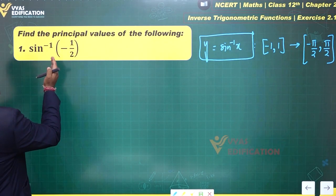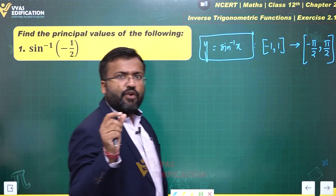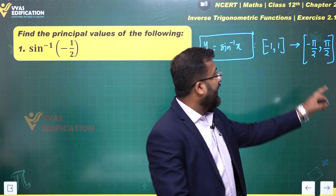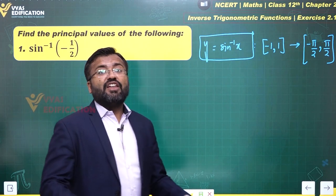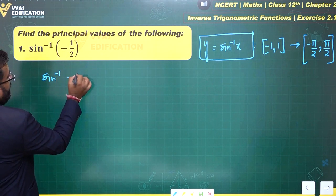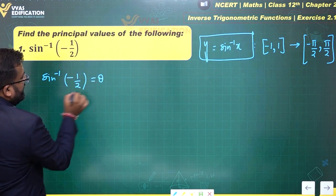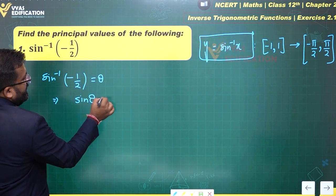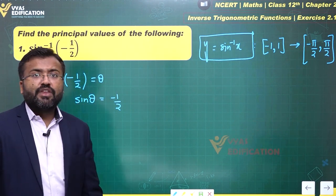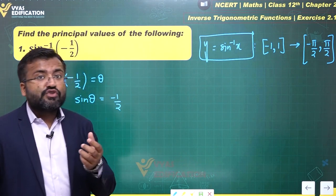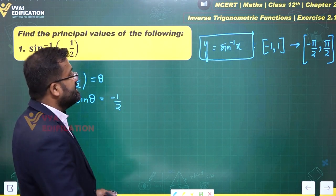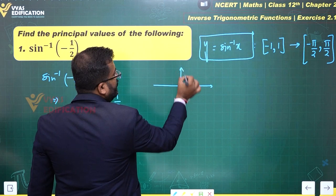Once you know that, you can deal with sin⁻¹(−1/2). For what value of angle lying in [−π/2, π/2] will sin equal −1/2? What this means is: if sin⁻¹(−1/2) = θ, this implies sin θ = −1/2, and our target is to find θ. So if sin θ = −1/2, we need to find θ in the interval [−π/2, π/2].